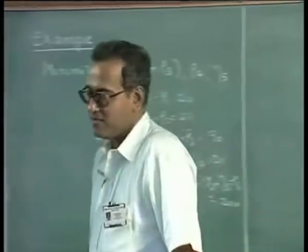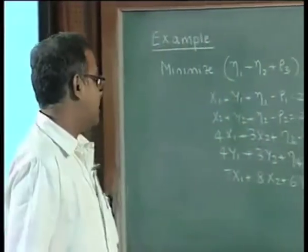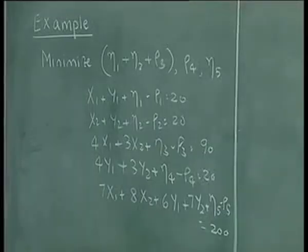In the last lecture, we were solving goal programming problems using the graphical method for those problems that had only two decision variables and the rest of the variables were the deviation variables.